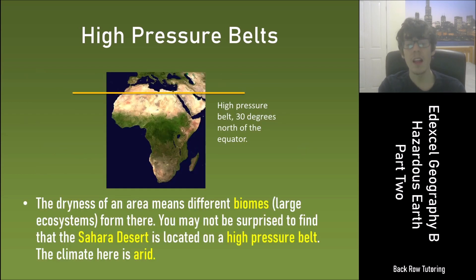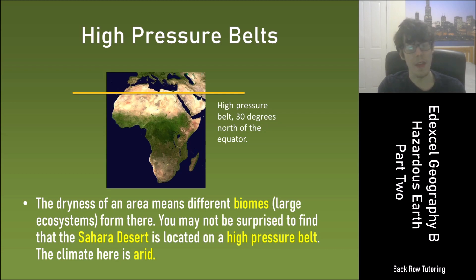The dryness of an area means different biomes form, and a biome is just a large ecosystem. You may not be surprised to find that the Sahara Desert is located on a high pressure belt. The climate there is arid.